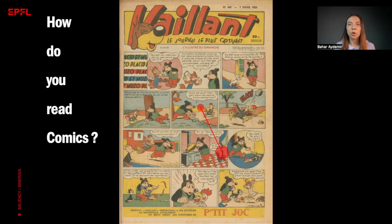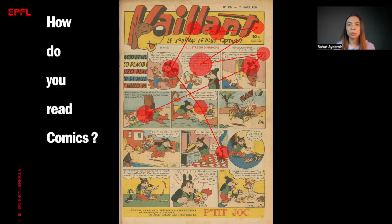But what about comics? Do you follow a strict Z pattern as if you are reading a book, or do your eyes wander around the page? In this slide, you see a path which shows the reading order of a person. The circles show the points where we look longer, while the lines show the quick jumps between different regions. As we see in this example, we usually read and look at the visuals in a mixed way.